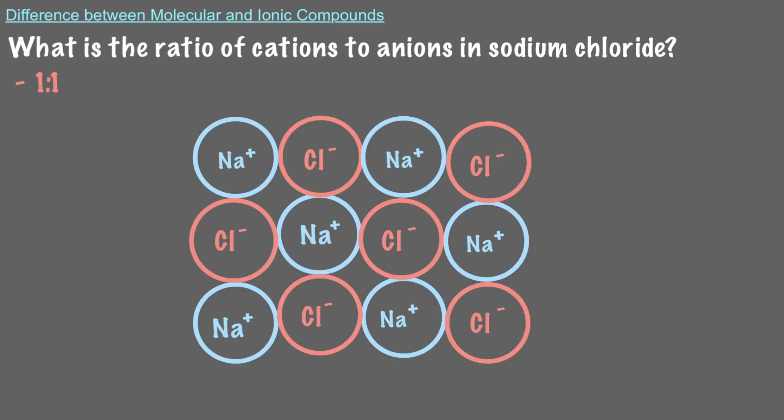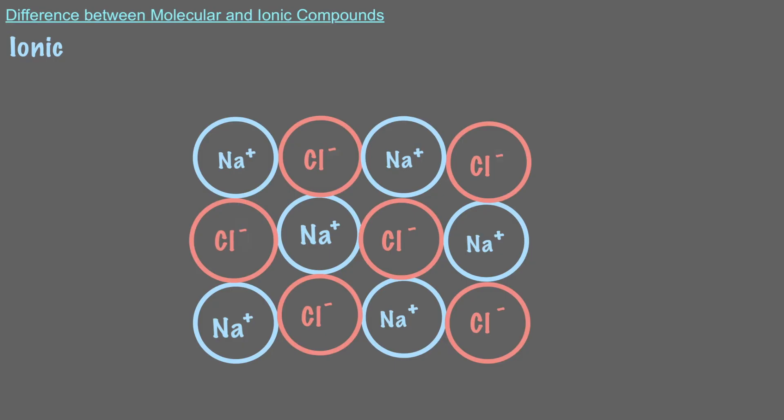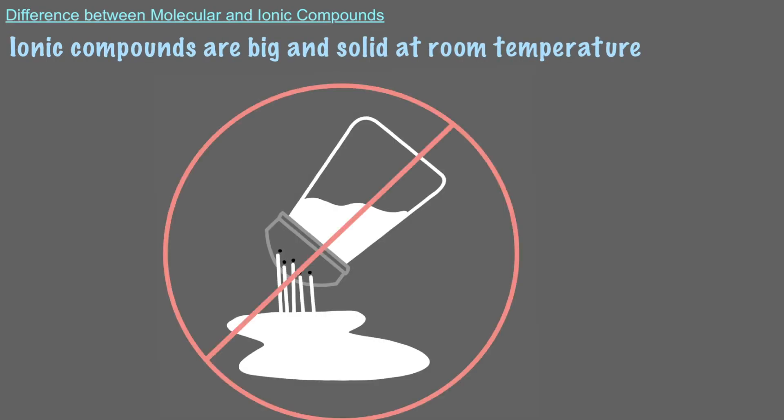The positive charge of one cation attracts multiple anions around it, and vice versa, so ionic compounds are big and solid at room temperature. Think about it, you have probably never seen liquid salt.